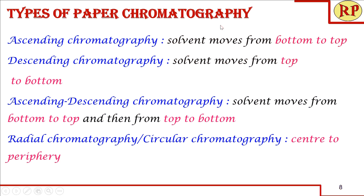There are different types of paper chromatography. Ascending chromatography is the common type, where the solvent moves from bottom to top, against gravity. In descending chromatography, the solvent moves from top to bottom with gravity, and the solvent reservoir is at the top of the chamber. In ascending-descending chromatography, both take place in a single process by increasing the length of the paper, improving separation and resolution. The solvent first ascends, then descends, allowing better resolution of compounds.